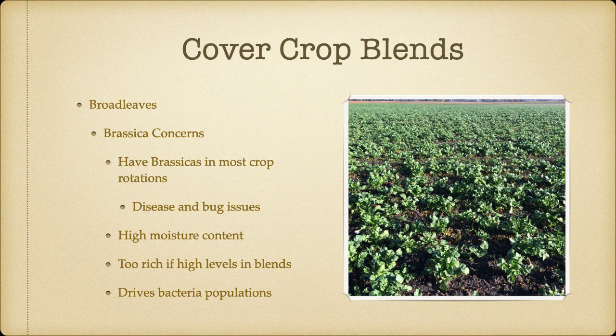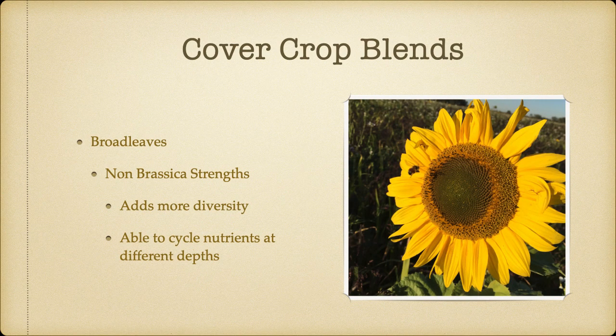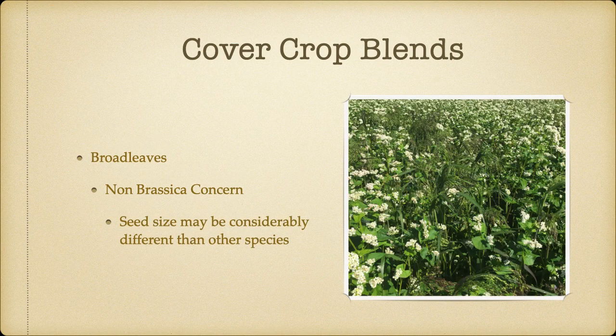With non-brassicas, the main strength is adding diversity to the system. I also like that they can cycle nutrients at different depths — sunflowers have a great taproot, are highly mycorrhizal, bring up those nutrients, and because the stalk doesn't rot quickly, it will feed that crop later into the next year. The concern with sunflowers and even buckwheat is they're bigger-seeded, so we can't just broadcast them — we'll have to put those into the ground to get them to grow in most situations.